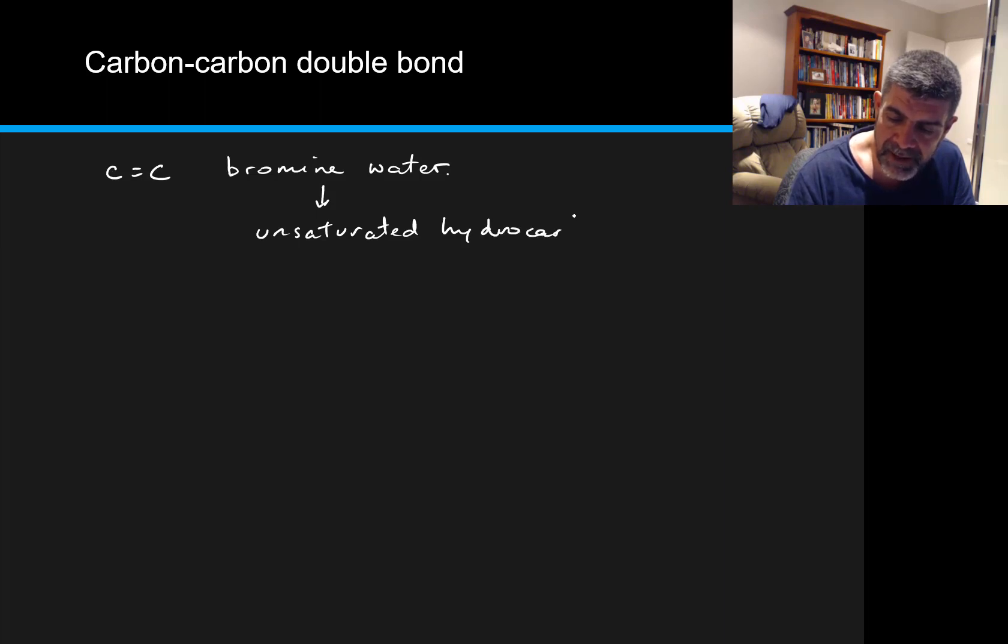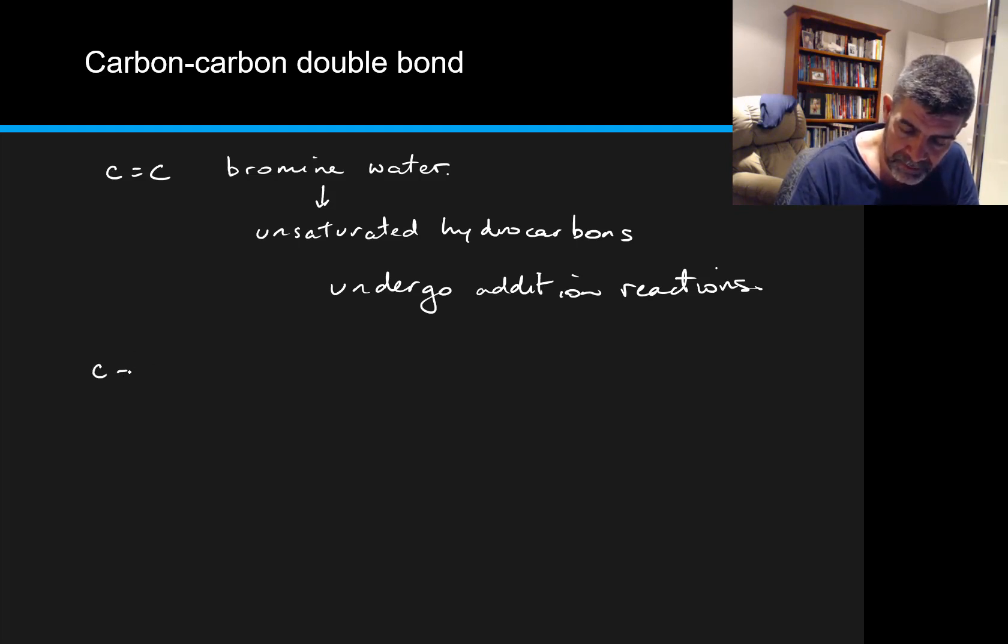Because what will happen with these unsaturated hydrocarbons is they will undergo an addition reaction. Structurally, if we have, say, for example, let's call it pent-1-ene. So here's our double bond here.